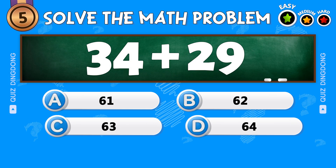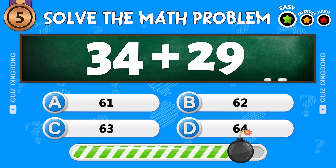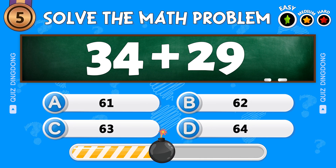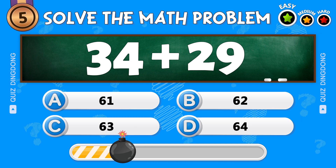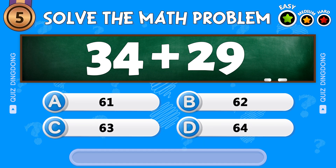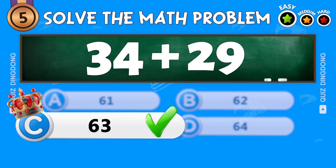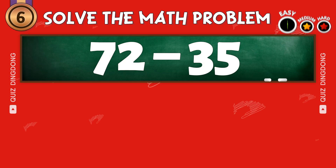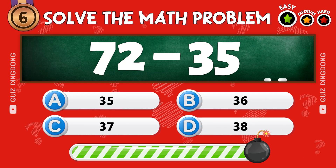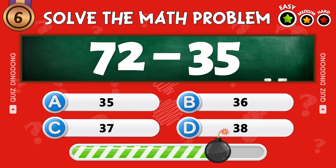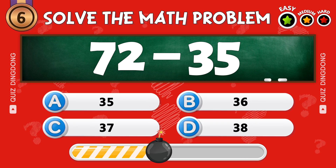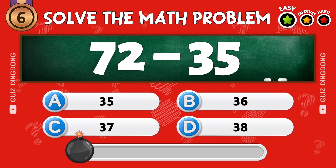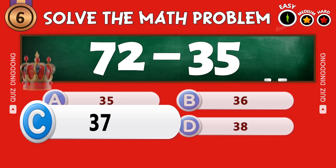Next question: what is 34 plus 29? Nice, the answer is 63. What is 72 minus 35? That's correct, the answer is 37.